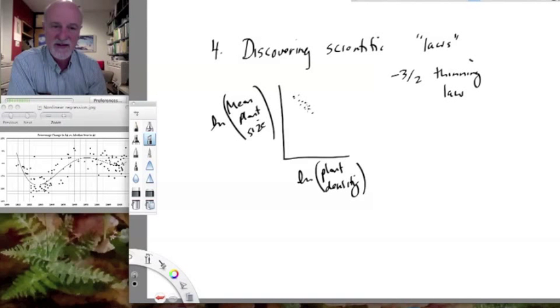But it was discovered by basically statistical fitting that this follows a particular pattern which is pretty repeatable with what looked like a slope of minus three halves.